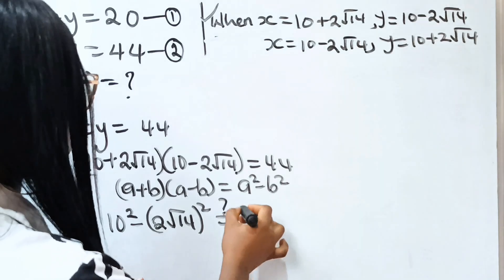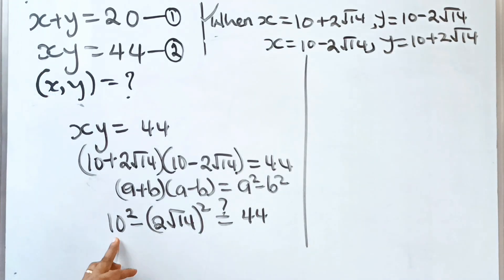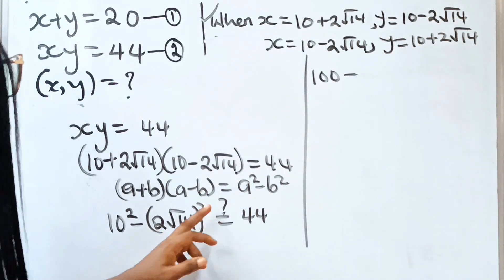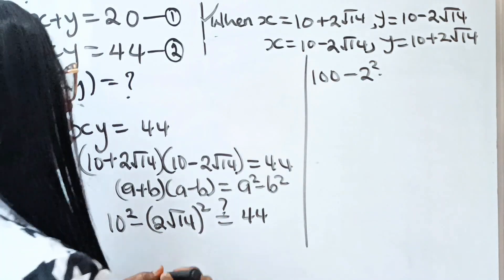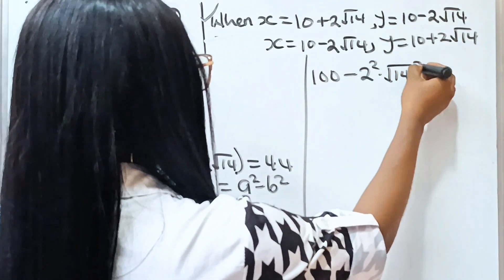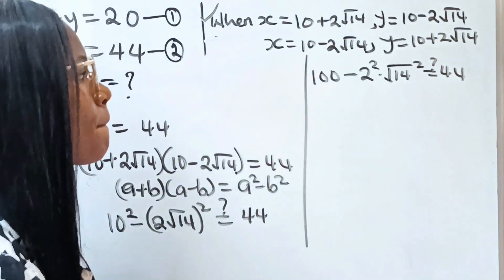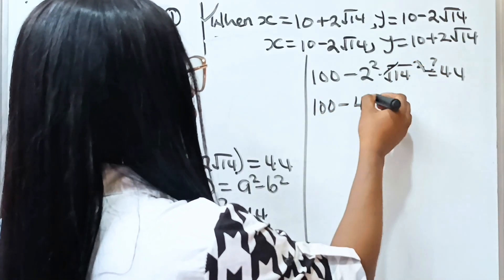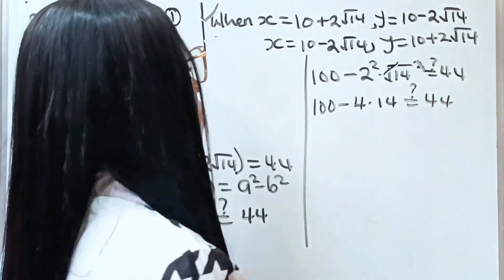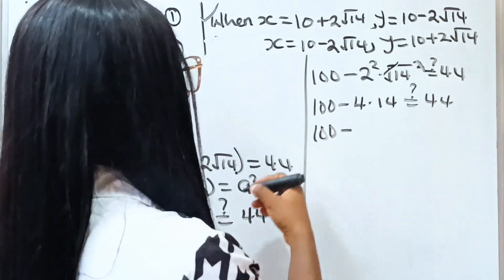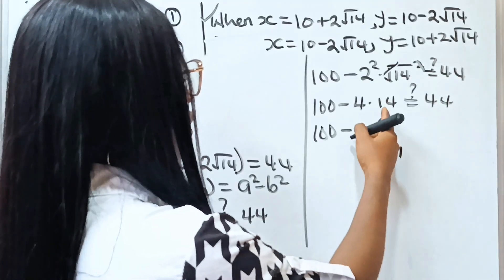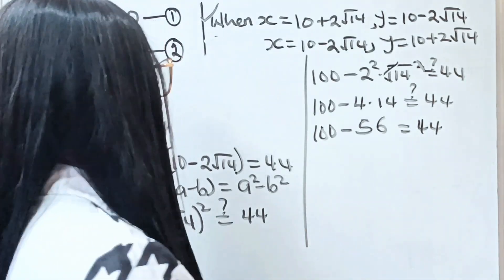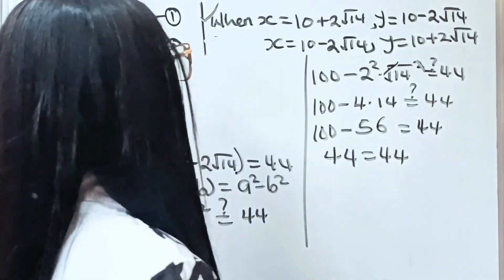Is this equal to 44? Solving further: 10 squared is 100, minus 2 squared times root 14 squared. That gives 100 minus 4 times 14. 4 times 14 is 56. So we have 100 minus 56, which equals 44. You can see that 44 equals 44 — that proves that the answers we got are correct.